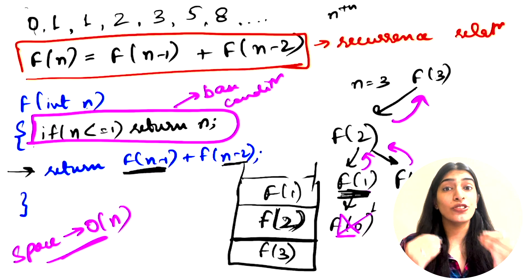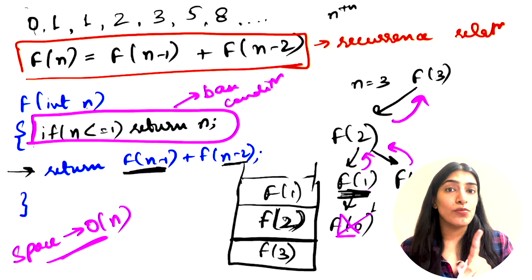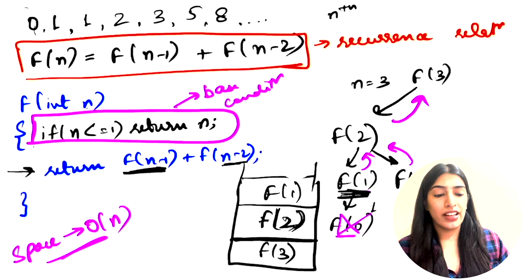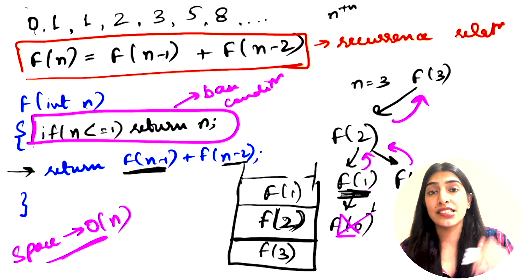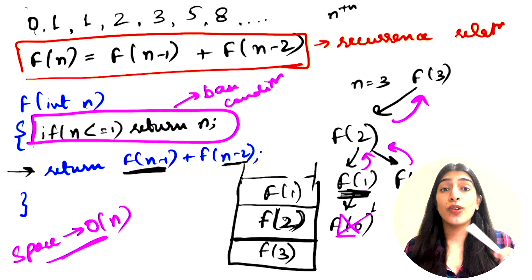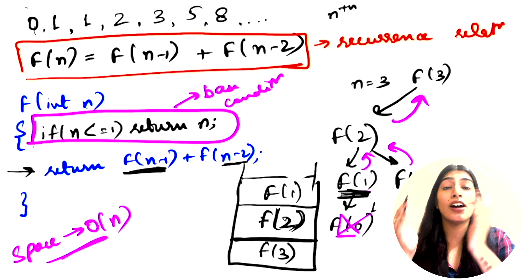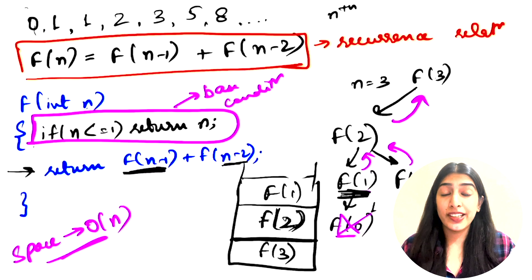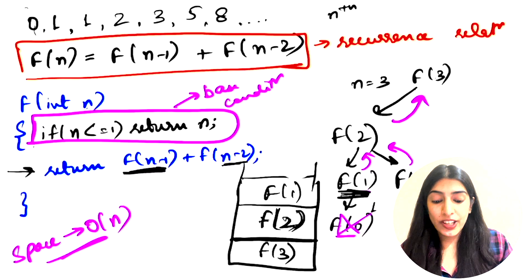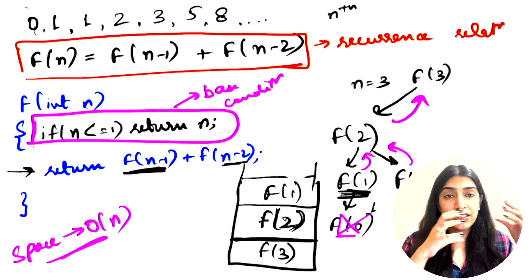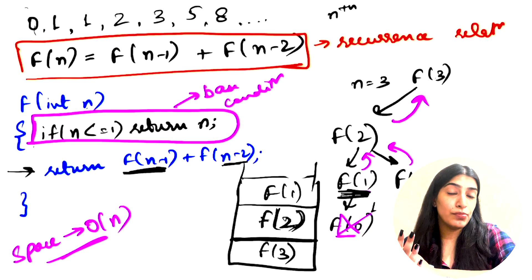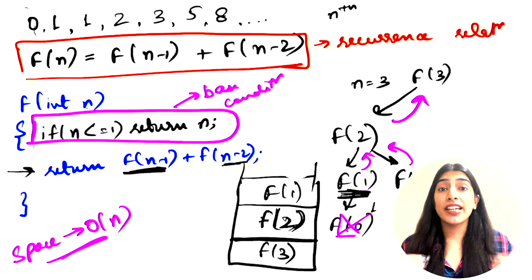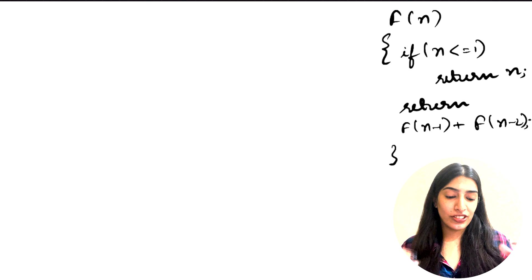Pause and let me know in the comments whether you can tell me why we're using recursion here. Suppose you didn't know this question belongs to recursion — how would you identify it? Let's revise: we use recursion when we are dividing our problem into smaller problems. Here, F(n) is calculated using F(n-1) and F(n-2), which are smaller problems. Using the smaller problems' results we get the result of the bigger problem — that's why we use recursion. Whenever we can divide a problem into smaller sub-problems, we use recursion.